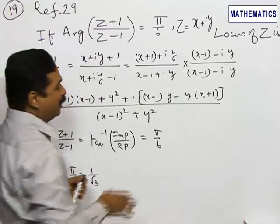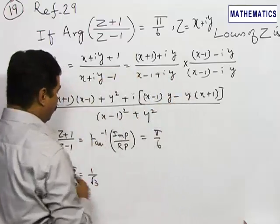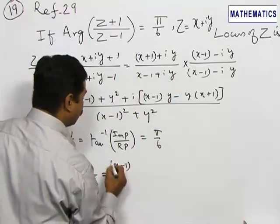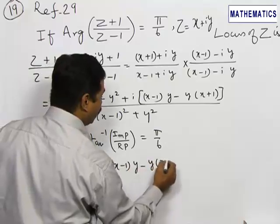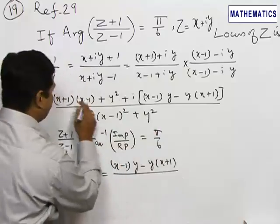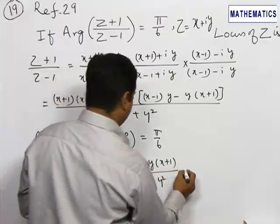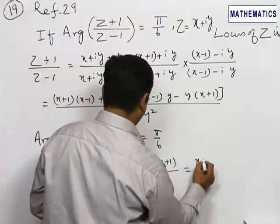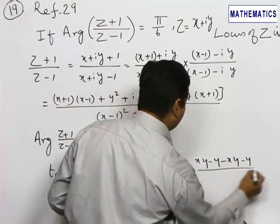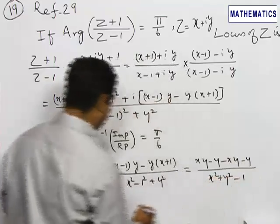For the imaginary and real parts, no need to consider the denominator—just divide the numerator quantities. This equals [(x-1)y - y(x+1)] / [(x+1)(x-1) + y²], which is (x²-1+y²) in the denominator. Multiplying gives xy - y - xy - y, simplifying to -2y / (x² + y² - 1).